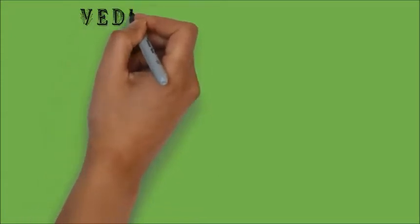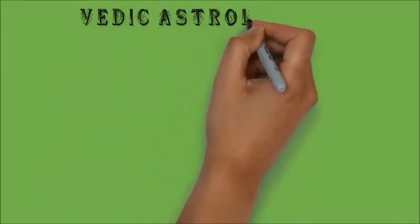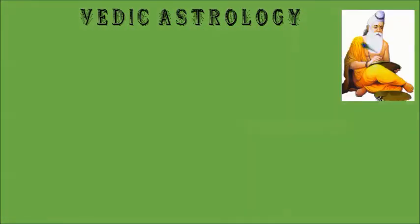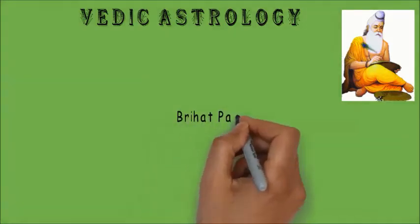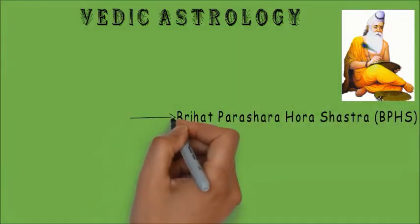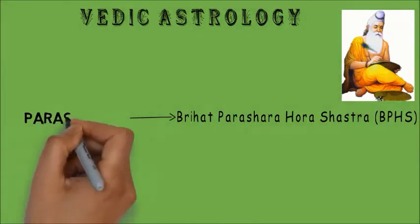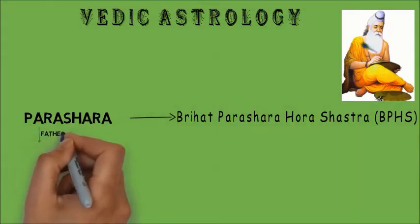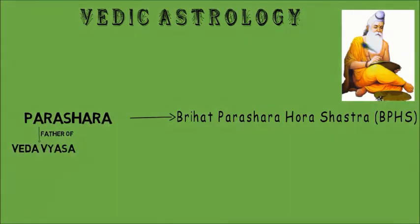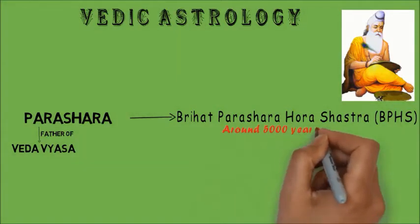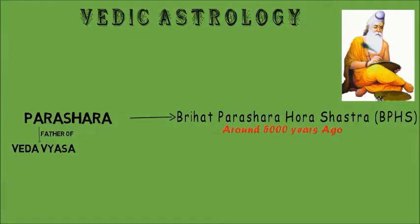At present, when generally people refer to Vedic Astrology or Jyotishya, they are talking about Brihat Parashara Hora Shastra, a branch of astrology created by Maharshi Parashara, who was the father of Vedavyasa. That was around 5000 years ago, during the age of Mahabharata.